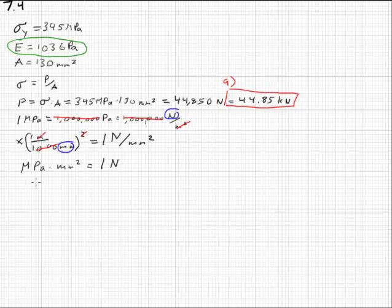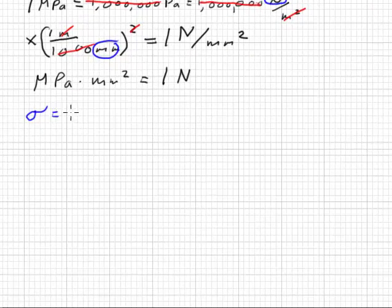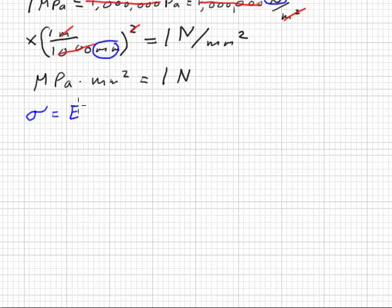Hooke's Law states that stress is equal to the modulus of elasticity times the strain. Now, the strain is the change in length divided by original length, and we are looking for the final length, which will be this original length plus the change in length.